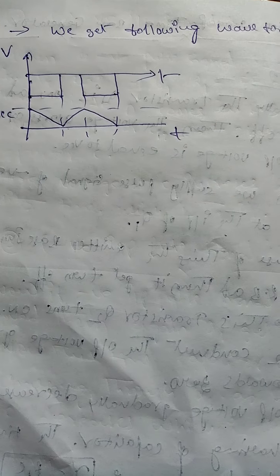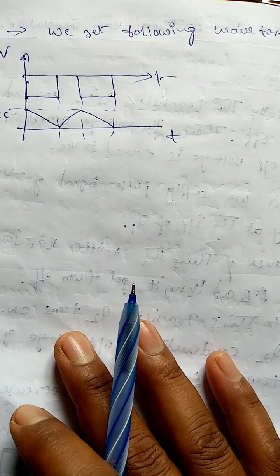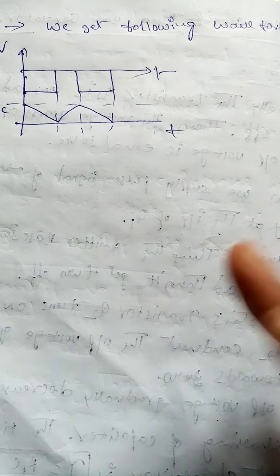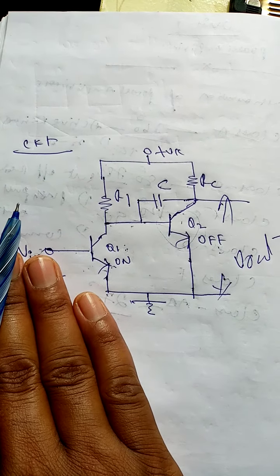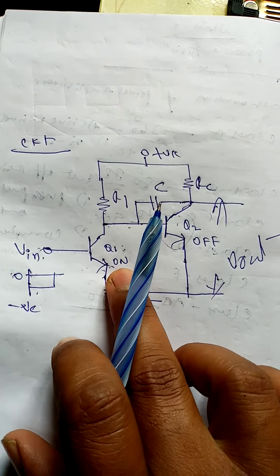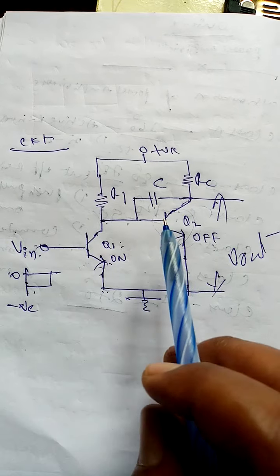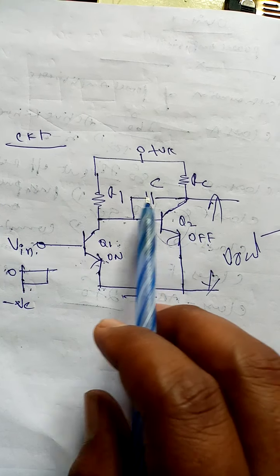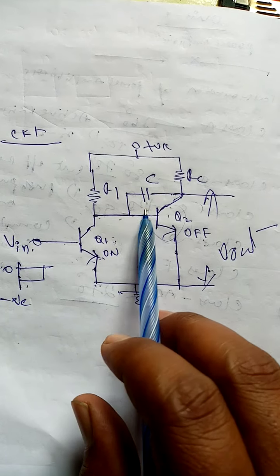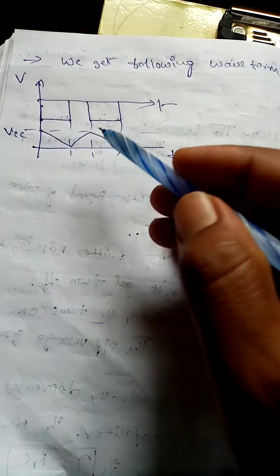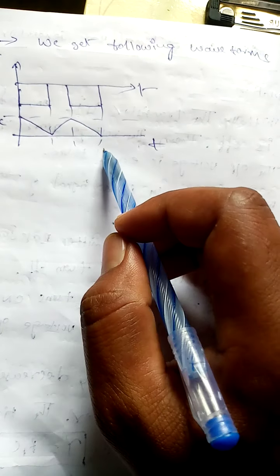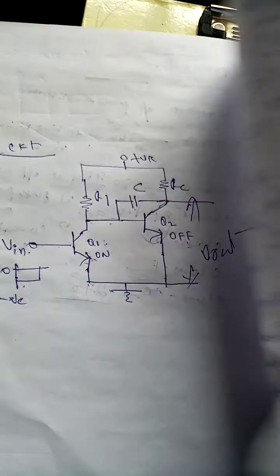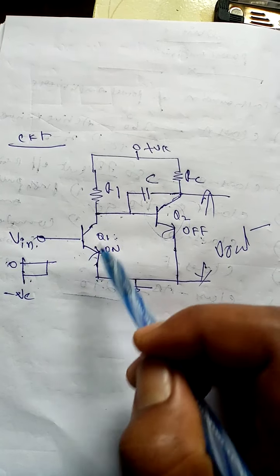Whenever no pulse is given, Q1 transistor is in the on stage. Low voltage is given to Q2 transistor — low voltage means Q2 becomes open circuit. When Q2 is open circuit, the capacitor starts charging again. Then when a negative cycle is applied again, the capacitor discharges because Q1 transistor is open circuit. This is a continuous process.